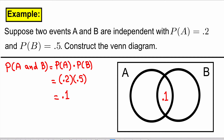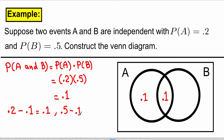0.2 times 0.5 is equal to 0.1. So this is the probability of the overlap — the area of the overlap — probability that A and B both happen. Just like the previous example, if I want to figure out probability of A but not B, I take probability of A, which is 0.2, and subtract 0.1 to get 0.1. And if we want to find probability of just B but not A, we take probability of B, which is 0.5, and take away the overlap, 0.1, and that gives us 0.4.